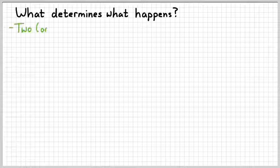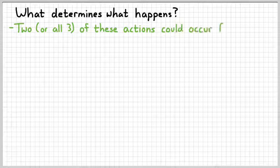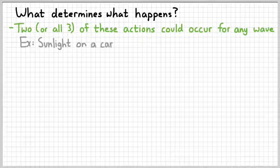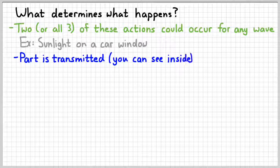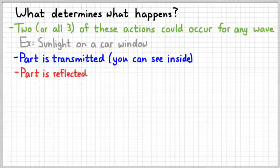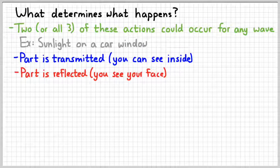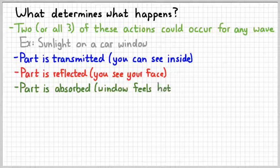We need to understand that more than one of these things can happen for any particular situation. For example, if you walk by a car in a parking lot on a sunny day, sunlight is incident on the window of the car. Part of that light could be transmitted — the light actually enters the car and you can see it reflecting off things inside. Part could be reflected — it's quite common to look at a car window and see your reflection, just like a mirror. And part could be absorbed — after sitting in the sun, you touch that window and it feels warm. So two or three of these things can happen in any given situation.